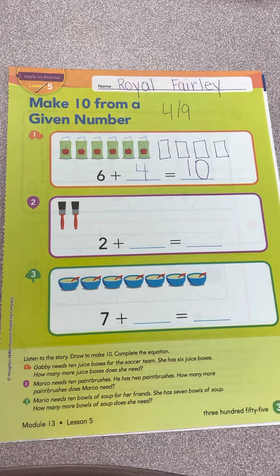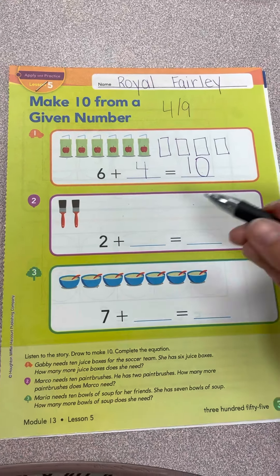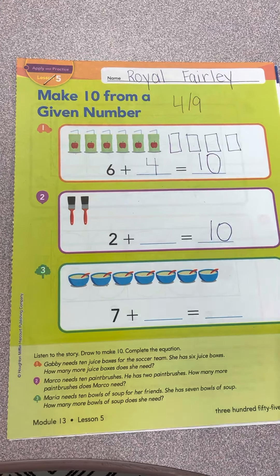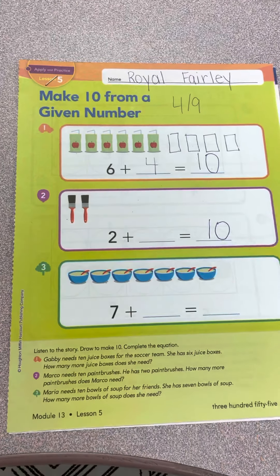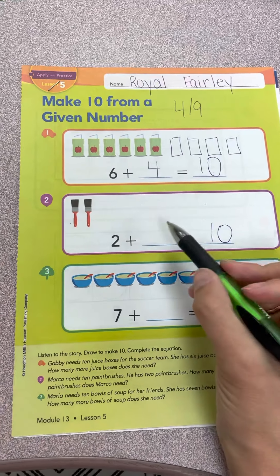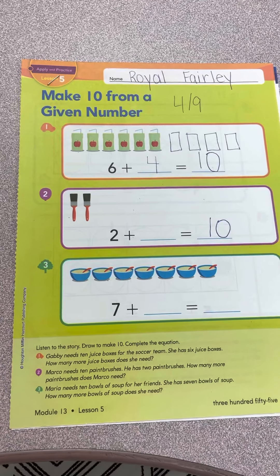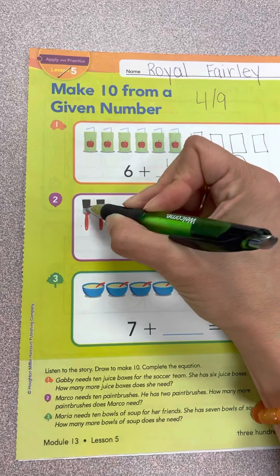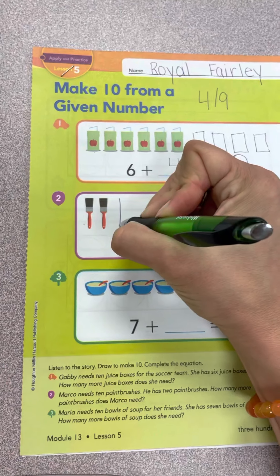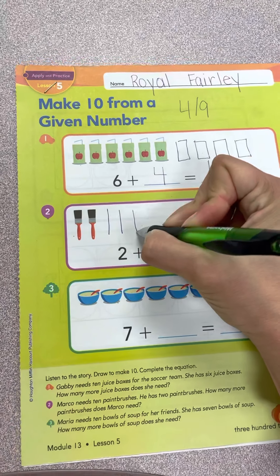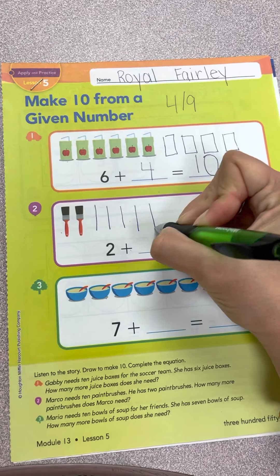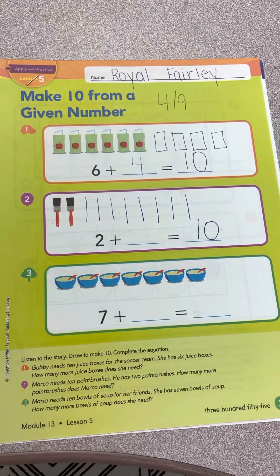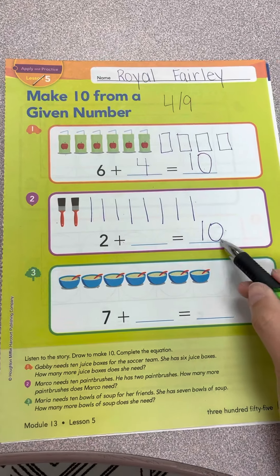Listen to this story. Marco needs 10 paintbrushes. He has 2: 1, 2. How many more paintbrushes does Marco need? So we count on from 2. Ready? 1, 2, 3, 4, 5, 6, 7, 8, 9, 10.